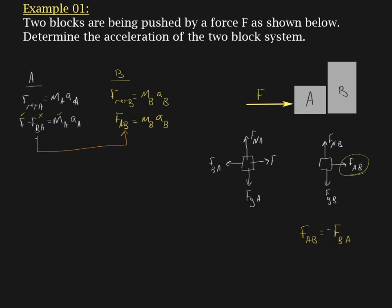So I have a question for you. Do you substitute m_B times a_B in for F_BA, or do we use the negative of m_B a_B? And I ask that question based on this relationship right here, Newton's third law.